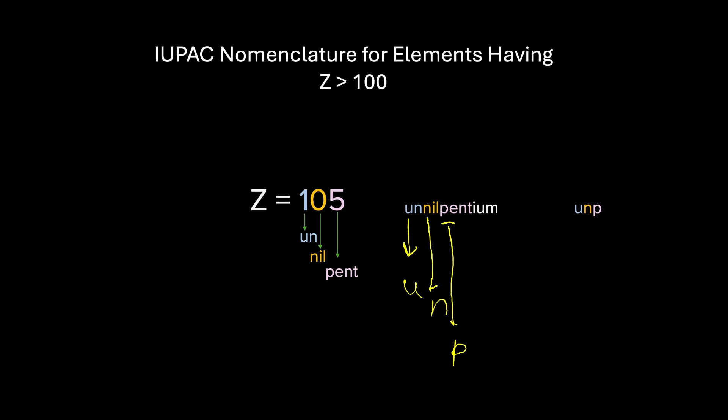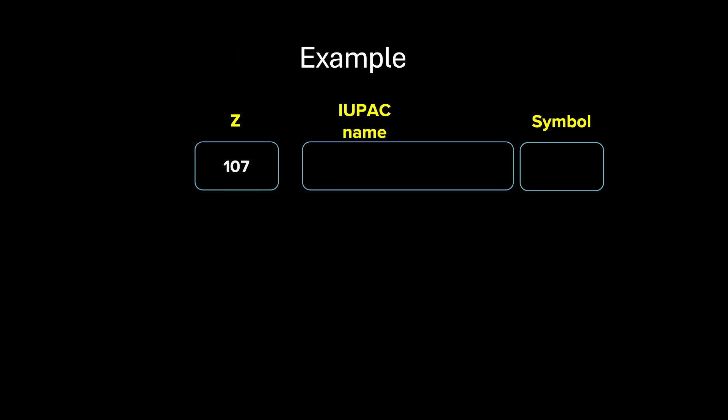Let's get some more practice of IUPAC nomenclature for elements having atomic number greater than 100. Let's begin with 107. Try it on your own. We have 1, 0, and 7. It's quite simple. For 1, we will take un. For 0, nil. For 7, sept. And then we put -ium towards the end. Let's take the first alphabets and give it the unique symbol that will be UNS for the atomic number 107.